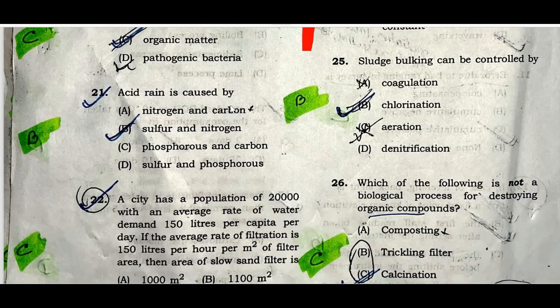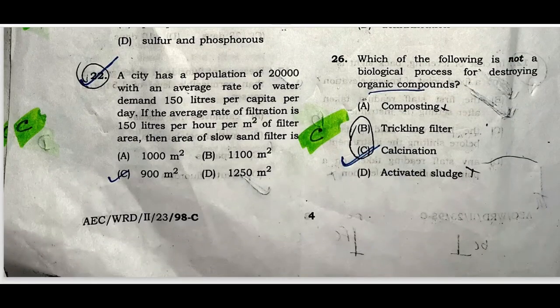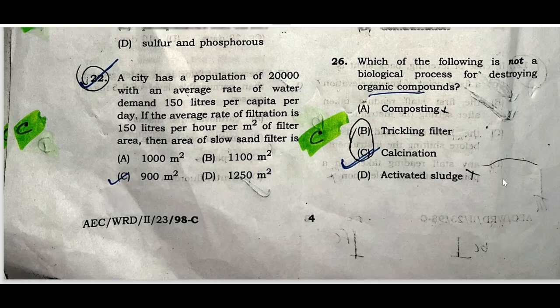Acid rain is basically caused by sulfur and nitrogen compounds. Option B is the correct one. For a city's water supply population calculation, option C is the correct one — that is 900 square meters.